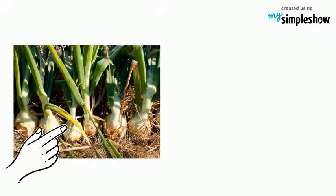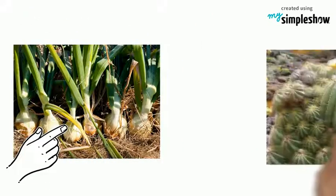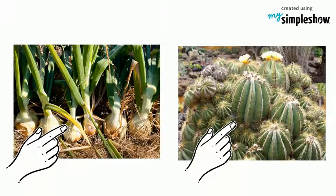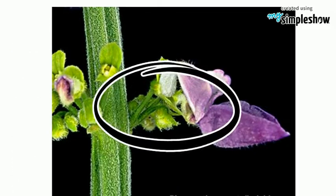The stems of some plants store food for the plant to use later, and some plants store water in their stems to use during dry periods. The stems produce new plant tissue.